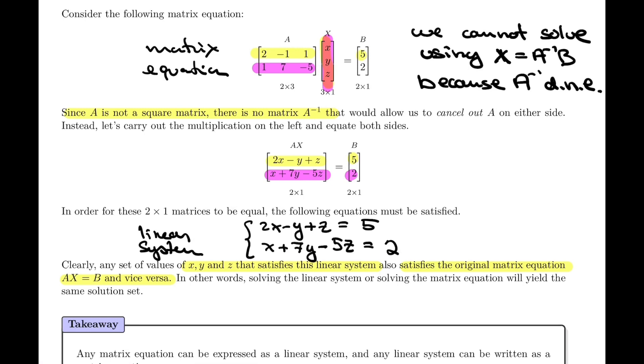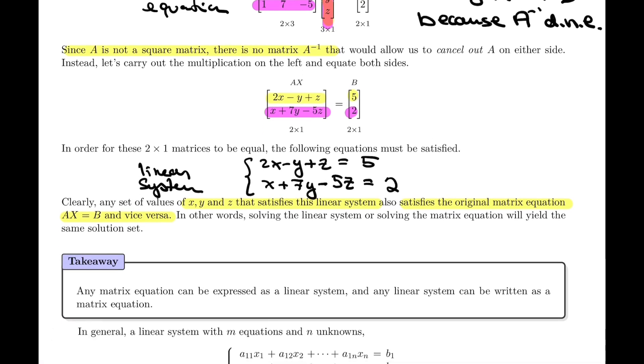Also notice that we went from the matrix equation to the linear system, but if I had started from the linear system and asked you to write a matrix equation, you could have done exactly the same thing but in reverse. You could have written the matrix Ax equals b, and then split Ax into the product of A times x. So the takeaway is that any matrix equation can be expressed as a linear system, and any linear system can be written as a matrix equation.